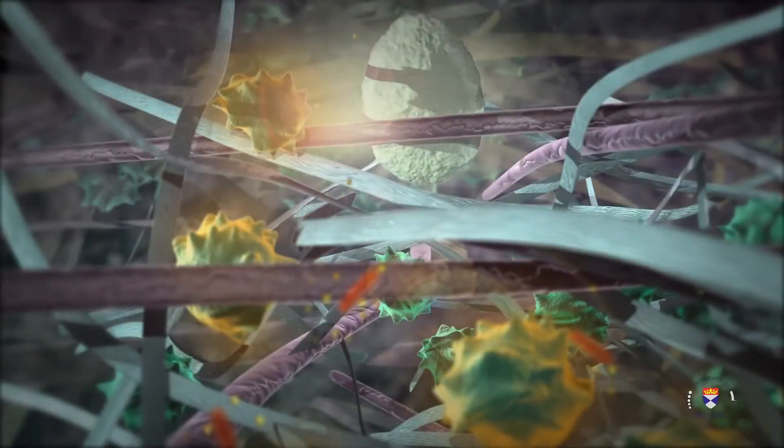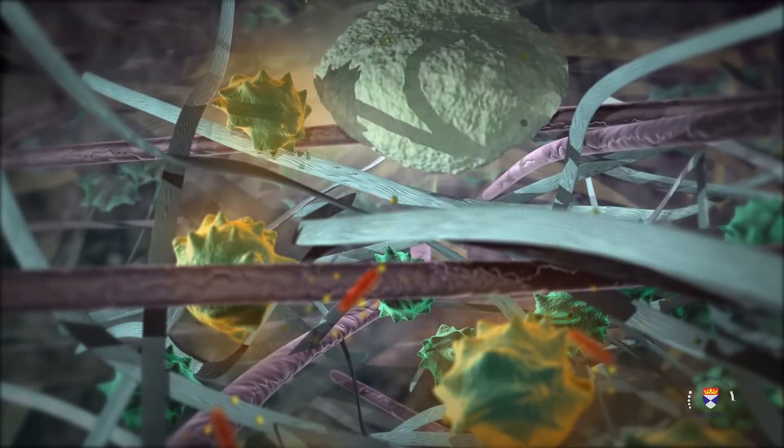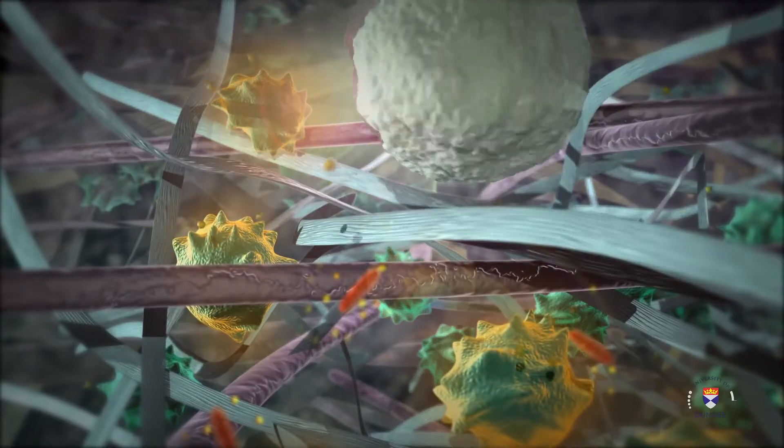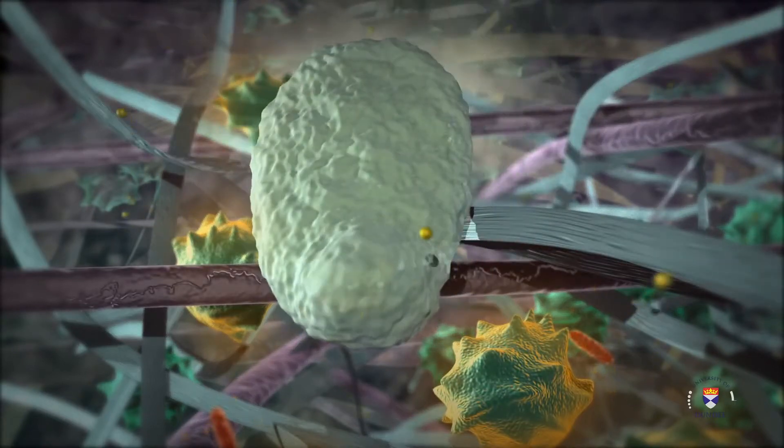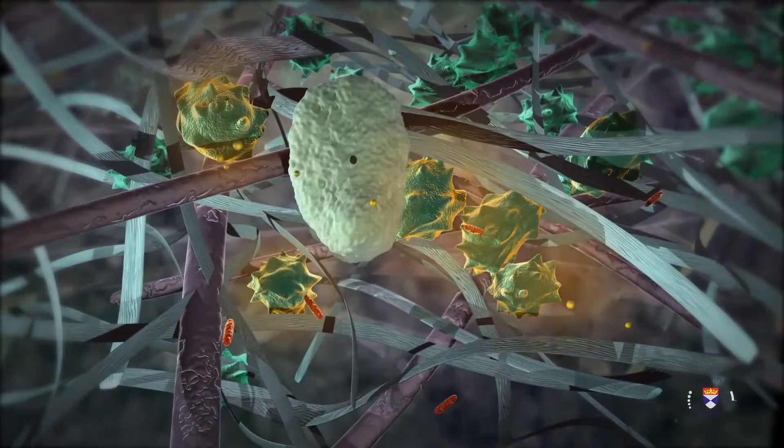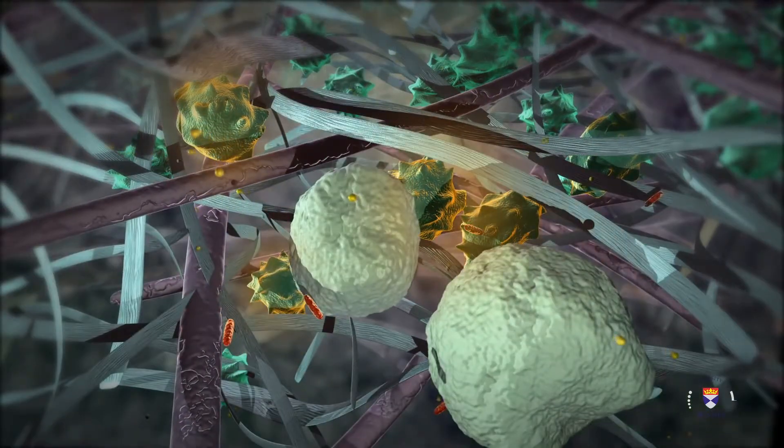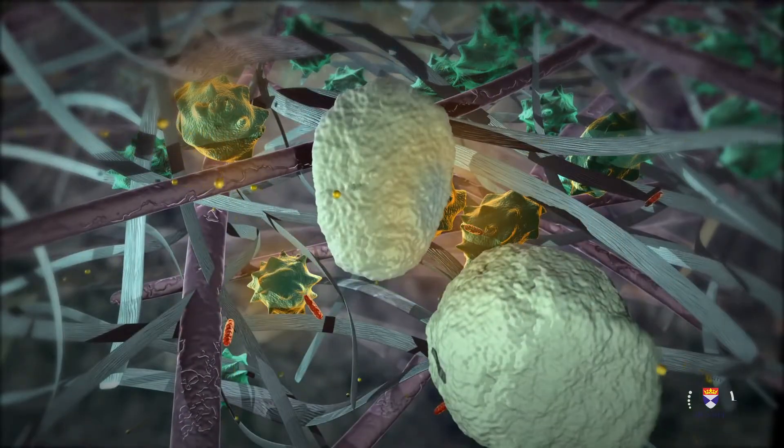Once the leukocyte arrives at the site of injury, it goes into action to clear and prevent infection by releasing cytokines or phagocytosing material. Neutrophils, the main leukocyte present in acute inflammation, primarily acts through phagocytosis.